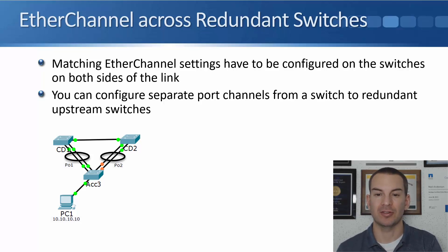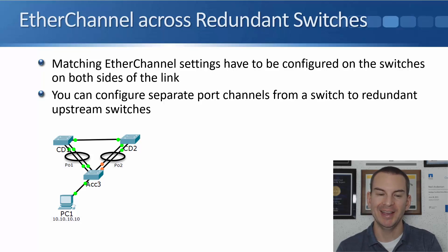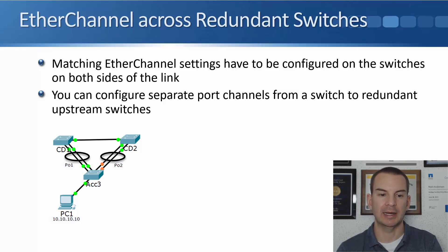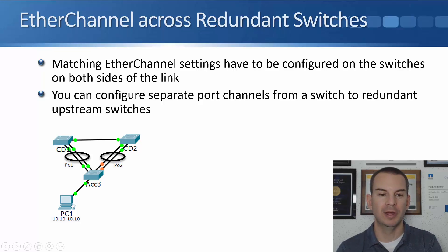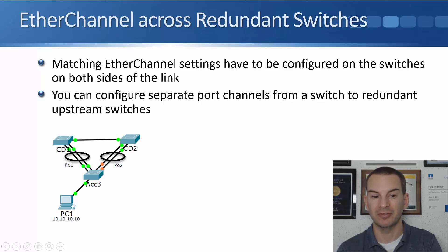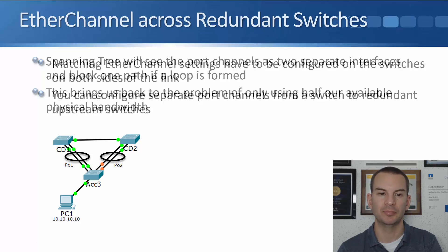Matching EtherChannel settings have to be configured on the switches on both sides of the link. You can configure separate port channels from a switch to redundant upstream switches. As you see in the diagram, I've got my access layer — Access 3 switch — and it has a port channel with bundled links going up to CD1, and another separate port channel with other physical interfaces bundled going up to CD2.